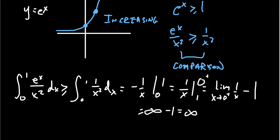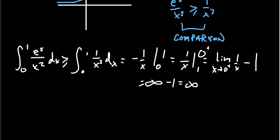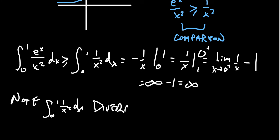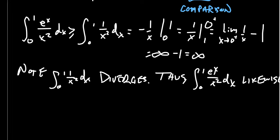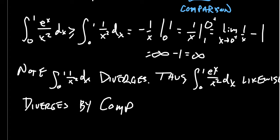This indicates that the integral diverges. Note that the integral from 0 to 1 of 1 over x squared dx diverges. Therefore we can conclude that the integral from 0 to 1 of e to the x over x squared dx likewise diverges by the comparison test. And that's all one has to do to make this argument.